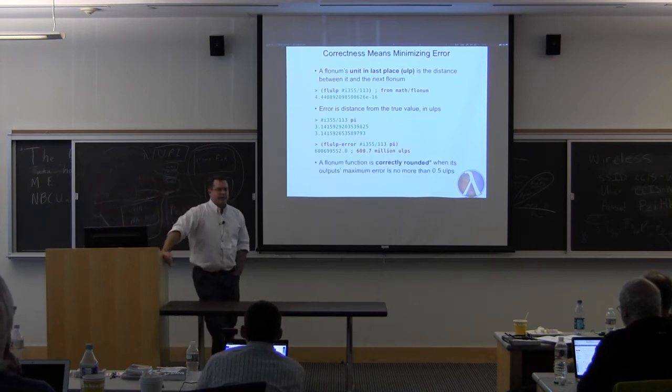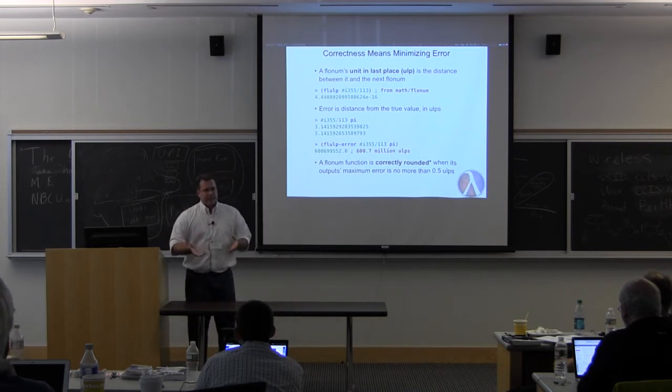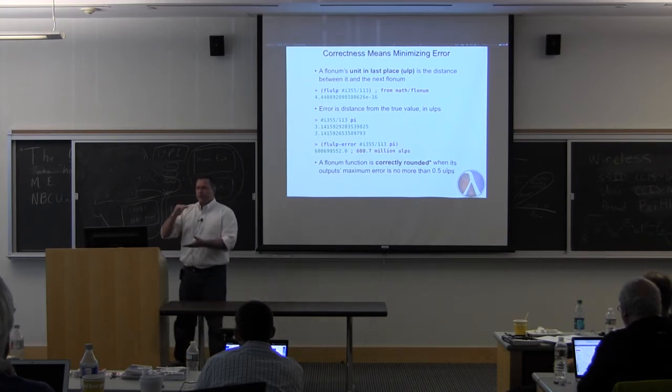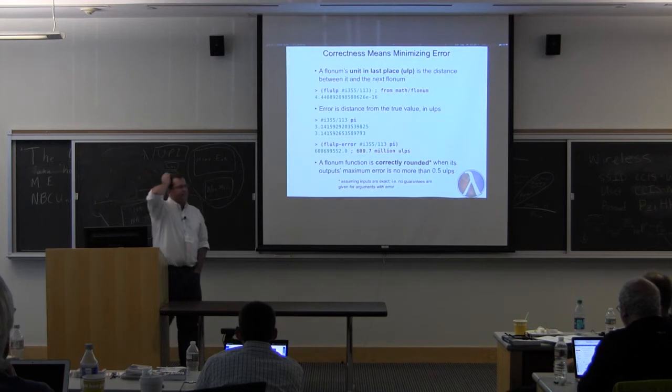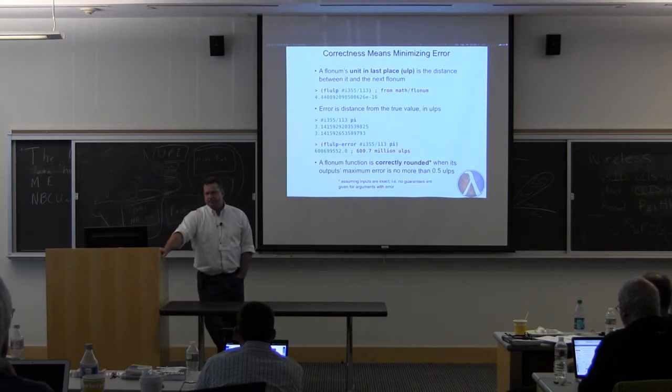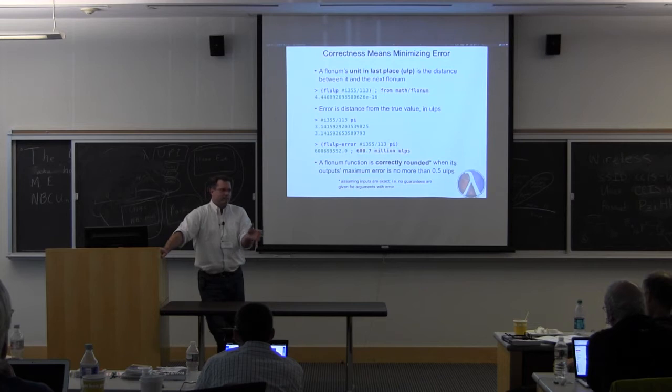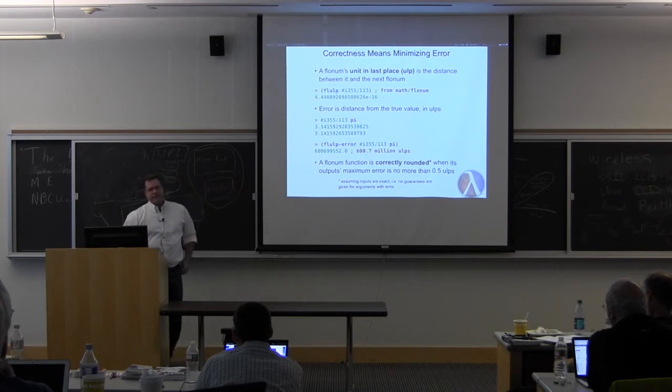So, we say that a floating point function is correctly rounded when its output's maximum error is only half an ulp. There's a good reason for this. If your function's actual output, the precise output, it always resides between two floating point numbers. It's got to return a floating point number. The nearest one is only half an ulp away, up to. So, that's what a correctly rounded function does. There is fine print here. This assumes that the inputs are exact. This assumes that the thing you're calculating, the inputs to it, are actually real numbers, the exact values that you want to calculate. They're not always. In fact, floating point numbers usually have some error. But if they happen to be exact, then you get guarantees. Otherwise, you get no guarantees. This is going to come back and bite us.